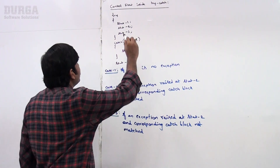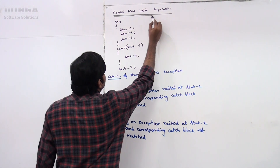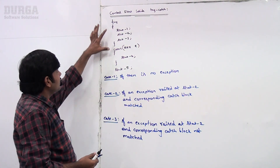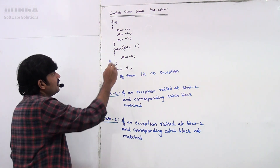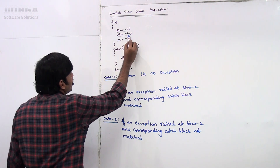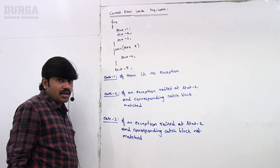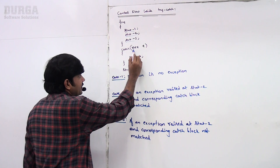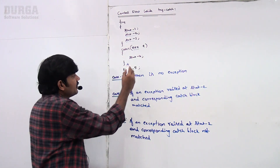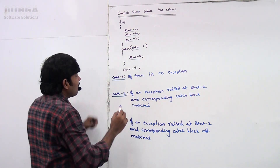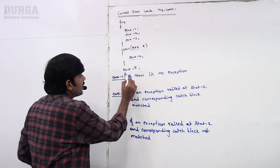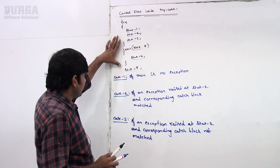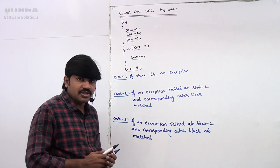Observe this one — control flow inside try-catch. Here, inside the try block there is statement one, statement two, statement three. Total three statements are there inside the try block. The catch block handles some exception, and there is statement four inside catch. After completing the catch block, statement five is there. So total five statements are there, using try-catch.